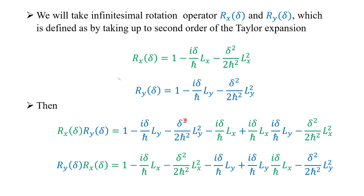During the multiplication, you ignore the higher-order terms — that is delta cubed and delta to the fourth. For example, if you multiply certain terms you will get delta cubed, which you can ignore. You take terms only up to delta squared, then you will get the expression for Rx Ry. Similarly for Ry Rx — now operating x first then y, versus y first then x. You can carefully look into the expression.